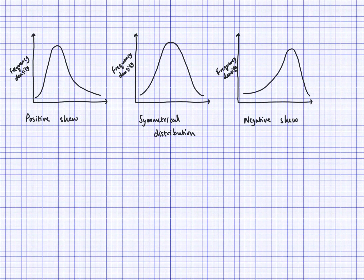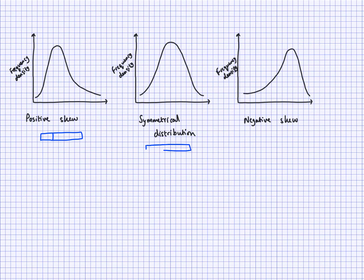Some other things to think about — one of the better diagrams you can use to find or guess what the distribution might be like is a box plot. For the first distribution (positive skew), the middle part of the box plot would look something like this, and the median would be quite close to the lower quartile. For the symmetrical distribution, you will have the middle part like this, and the median would be somewhere in the middle. And for the negative skew, the middle part of the box plot would look like that, and the median is going to be quite close to the upper quartile.